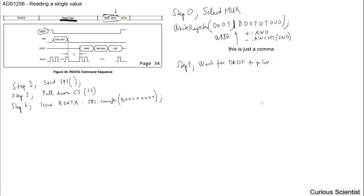After the RDATA command is sent, we are at this point in the sequence and we have to wait T6. Step five is basically wait T6. I also explained this in the previous video, so please go back there and see what T6 is and how you can calculate it.